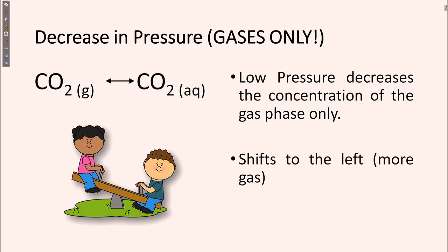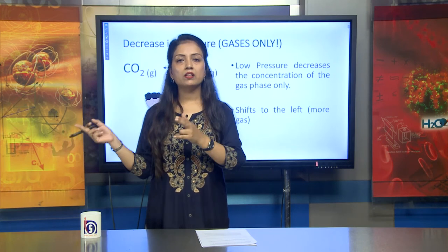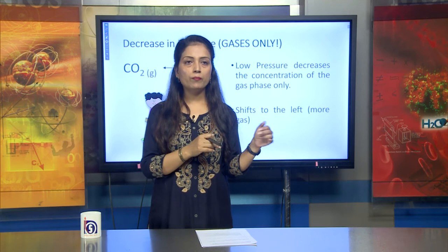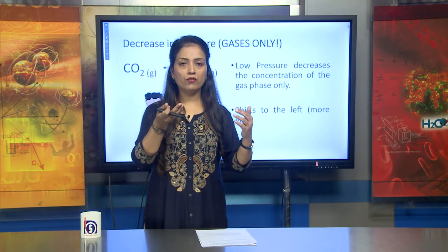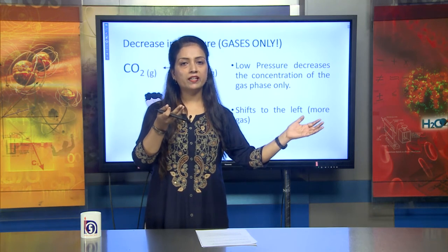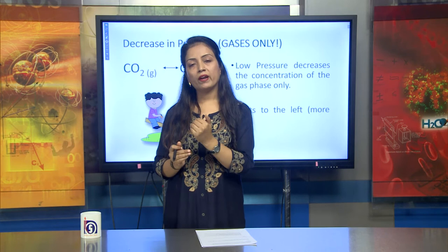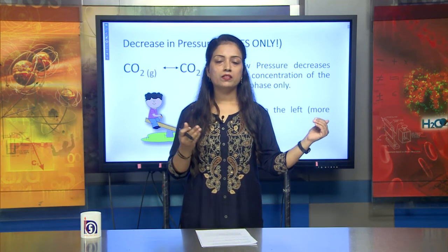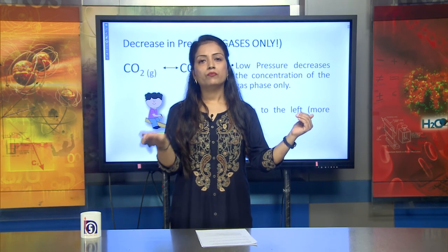On the other hand, when pressure decreases, the concentration of the gas phase only will shift to the left direction — that means more of the gaseous state. This will convert in the backward direction, meaning carbon dioxide aqueous converts back to carbon dioxide gaseous form, because as the pressure is released, the dissolved carbon dioxide gas in the water will be evolved. So on lower pressure, carbon dioxide aqueous form converts to carbon dioxide gaseous form — lower pressure always favors the backward direction.